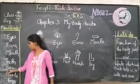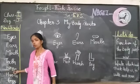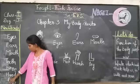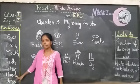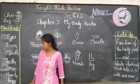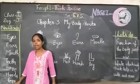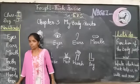Next word is nose. N, o, s, e. Nose. Next word is hand. H, a, n, d, s. Hands. Next word is legs. L, e, g, s.